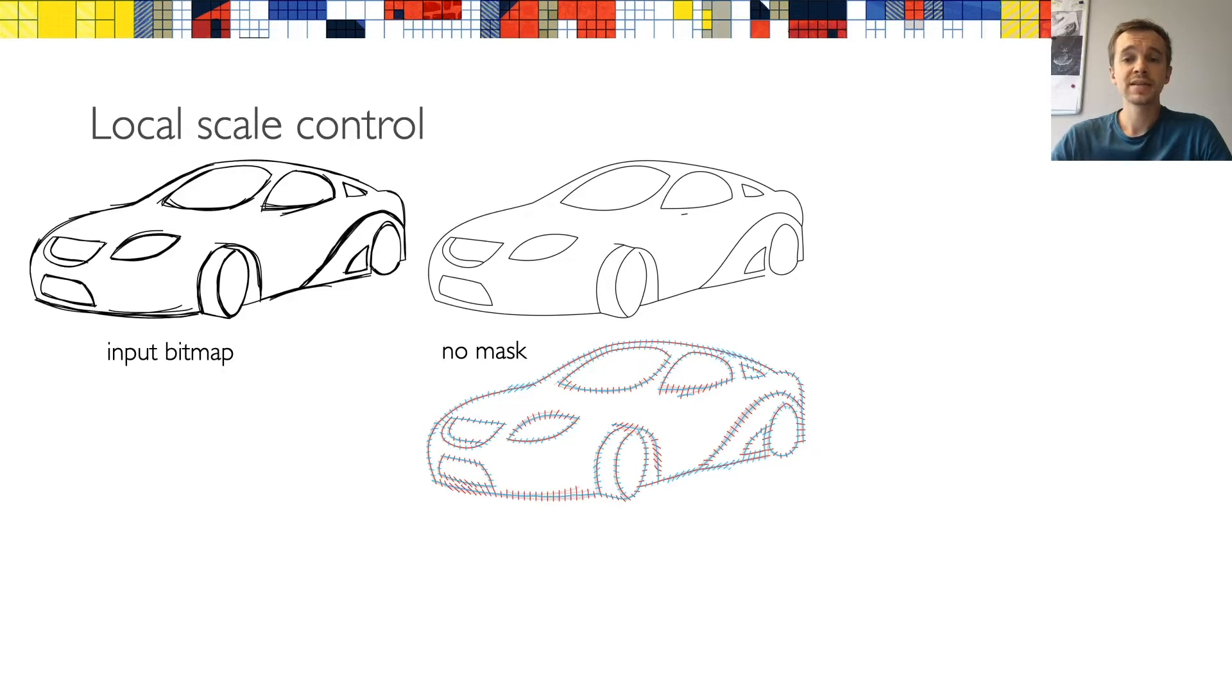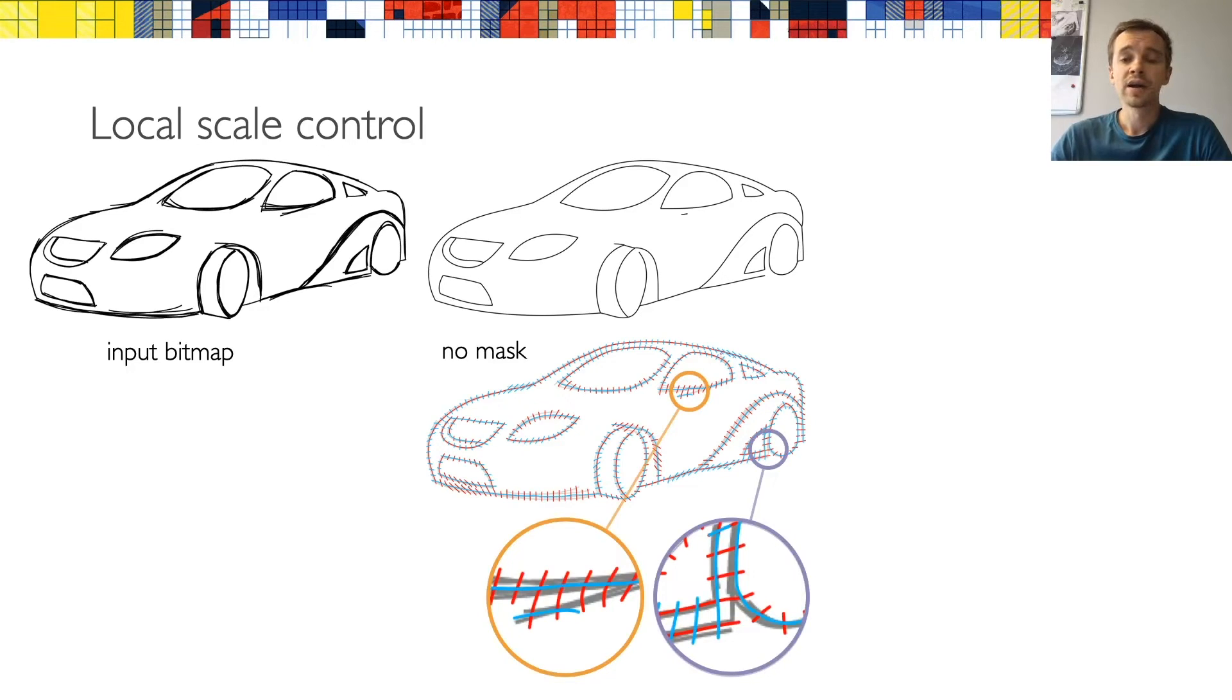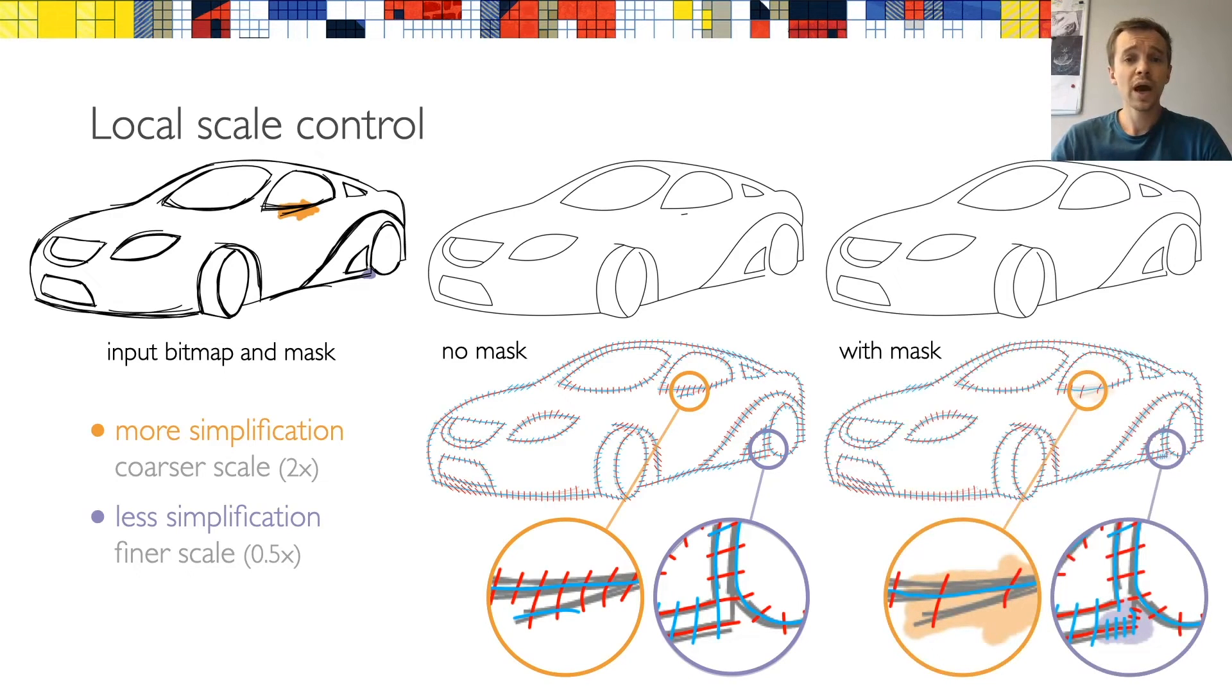A strength of our method is that the amount of simplification can be controlled locally by changing the scale of the parameterization. So, for instance, for this car, uniform scale is not suitable because the car contains multiple levels of detail, and we can see that the strokes around the window were not merged, while a small stroke at the back wheel was missed. We can indicate this to our algorithm by drawing a simple mask, where the orange color means that we want more simplification, and the purple color means less simplification. If we now recompute the parameterization, we can see how the grid size changed in these two areas, and that the final result has improved.